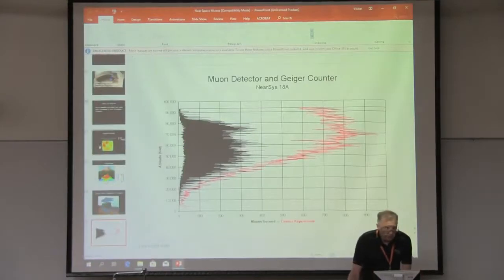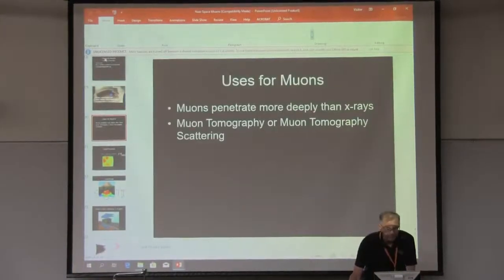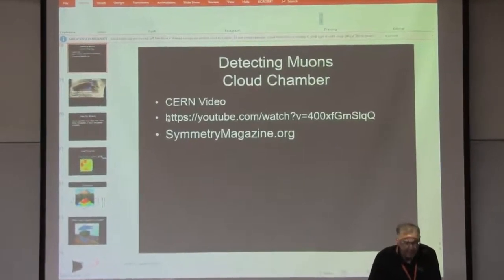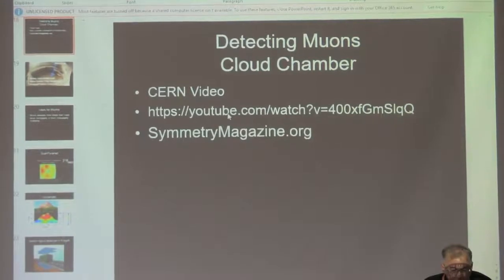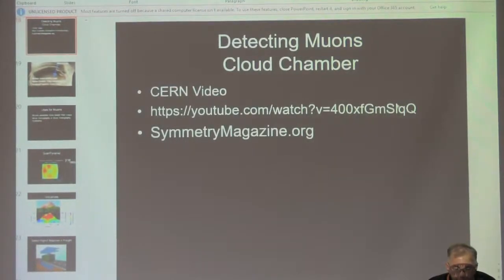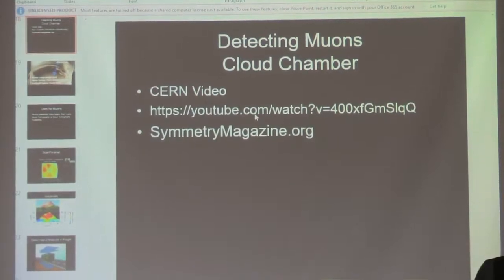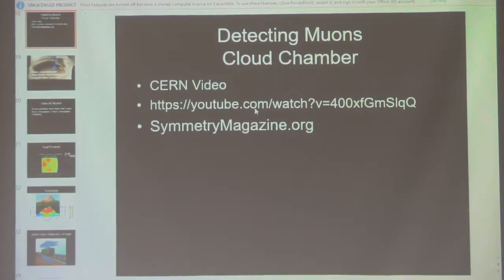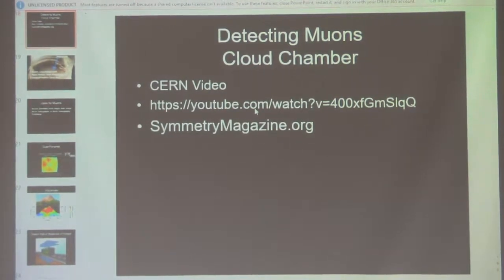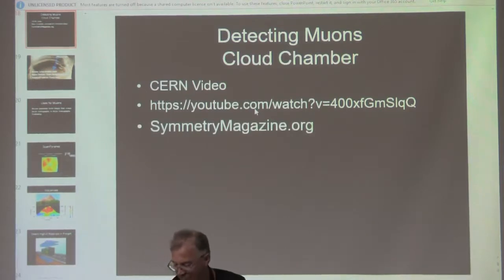I was going to show a video of a cloud chamber in action, but I can't paste the link here. The video would have shown how to produce a cloud chamber and what the cosmic ray trails look like inside it. Remember, about half of the radiation going through you right now are these muons. We no longer call them mu-mesons — mesons are two quarks, and the muon has no internal structure — so it's properly called the muon.